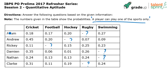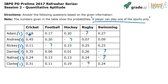Since each player can play only one sport, the overall probability for each player is one, distributed across five sports. For example, Adam can play any one of the five sports. In cricket, Adam's probability is 0.18, which means 18/100 or 9/50.